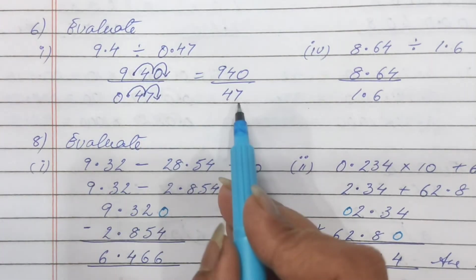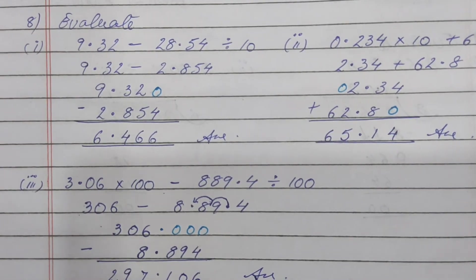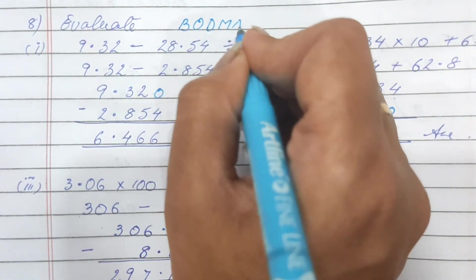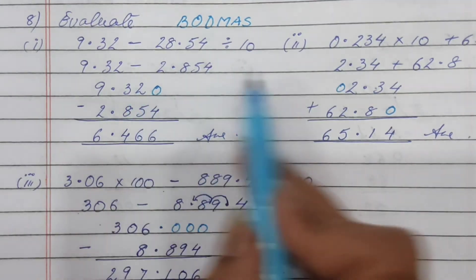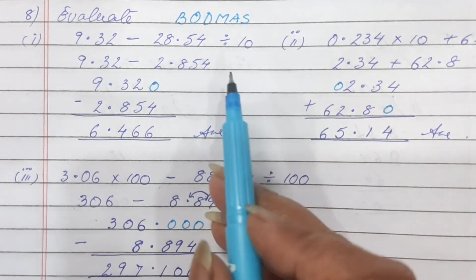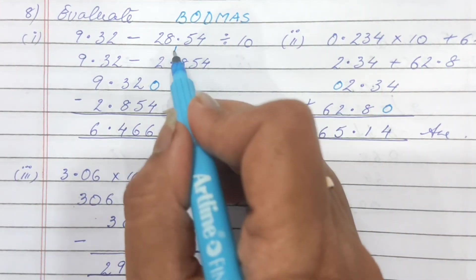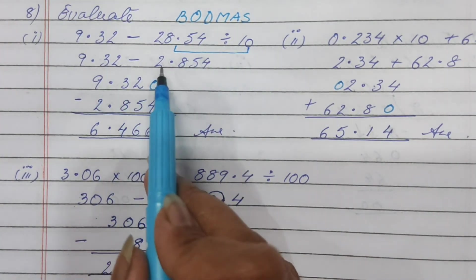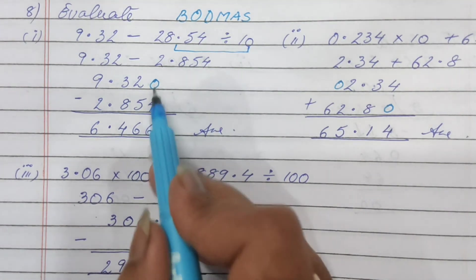Look at question 6 — we are shifting decimals. Now look at question 8 — this is evaluate. Whenever we are doing evaluate, keep one rule in mind: BODMAS — Brackets, Of, Division, Multiplication, Addition, and Subtraction. We must follow this order. First we divide, then multiply, then add, then subtract. So we solve the division part of the question first, shifting the decimal back one place, giving us 9.32 minus 2.854. Now do the subtraction, remembering to make them like decimal places by adding zeros.